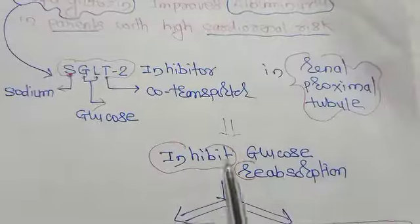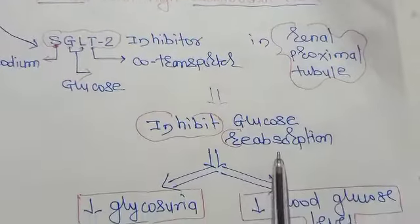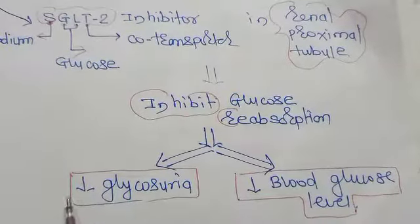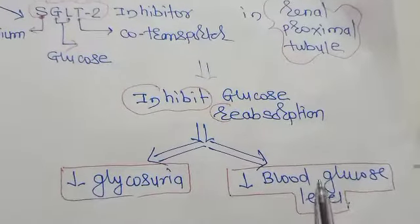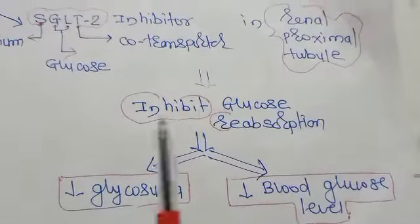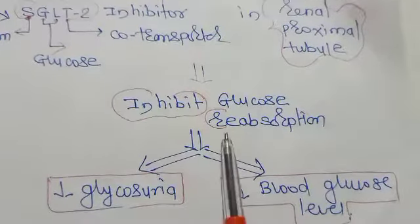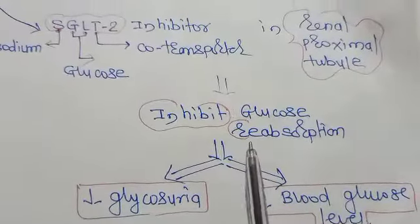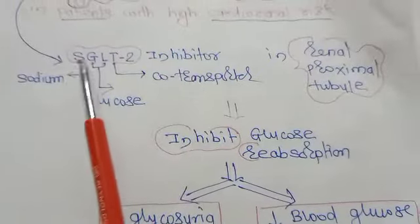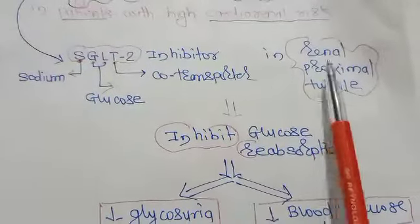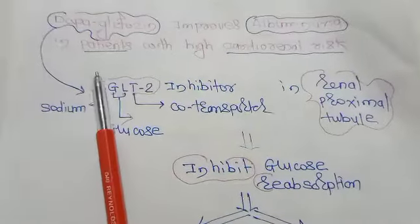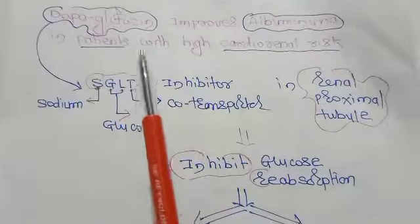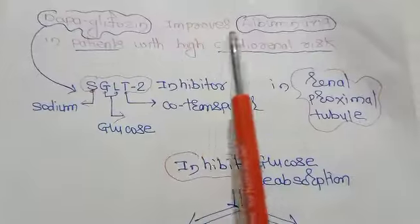It inhibits glucose reabsorption, ultimately reducing glycosuria as well as decreasing blood glucose levels. It does this by inhibiting the sodium glucose co-transporter in the renal proximal tubule. That's why Dapagliflozin is preferred in patients with diabetes mellitus and hypertension.